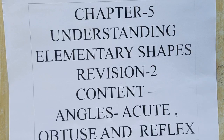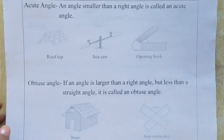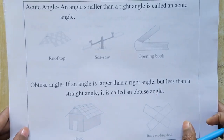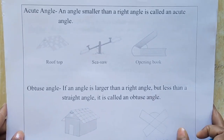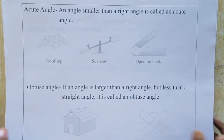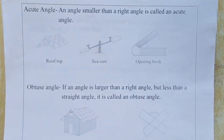An angle smaller than a right angle is called an acute angle. The acute angle is greater than 0 degrees and less than 90 degrees — that is, less than a right angle.